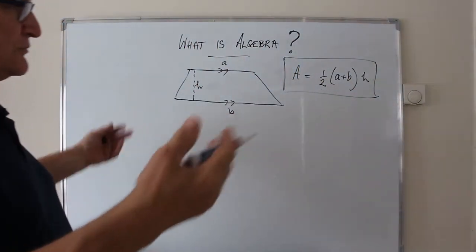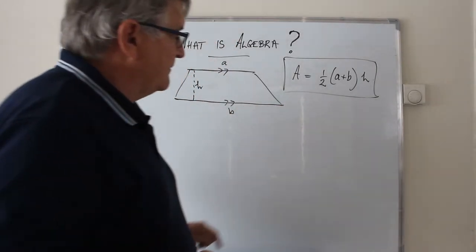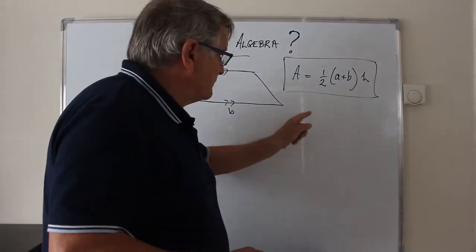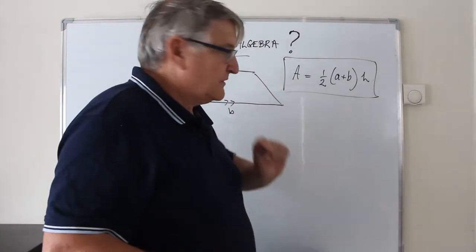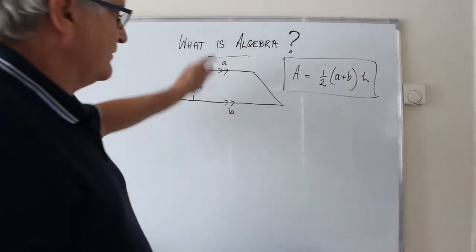You'll be familiar with all sorts of formulas. Area of a circle, pi r squared. Perimeter of a circle, 2 pi r. Volume of a cylinder, pi r squared h. And all we've done is we've used letters to represent quantities.